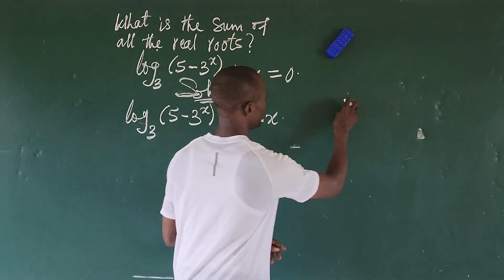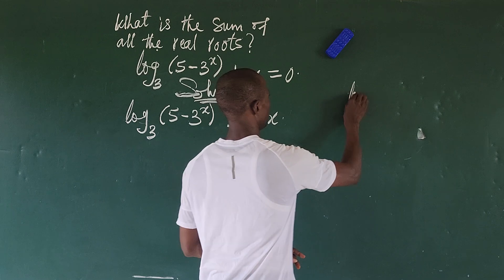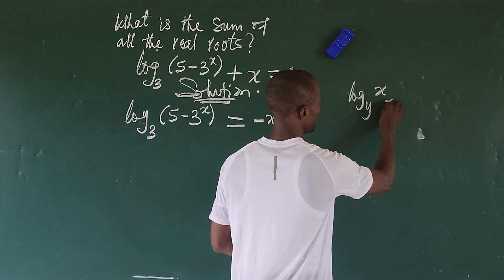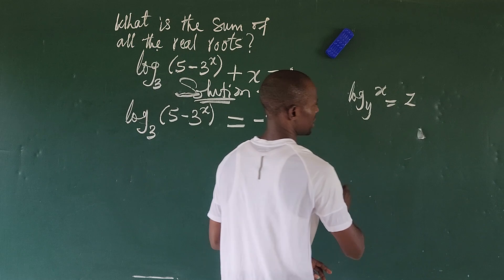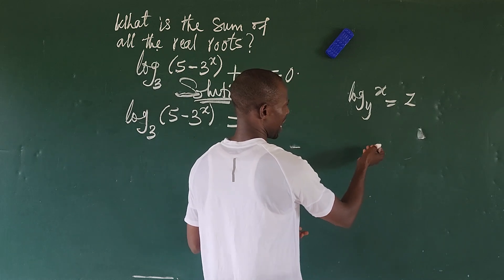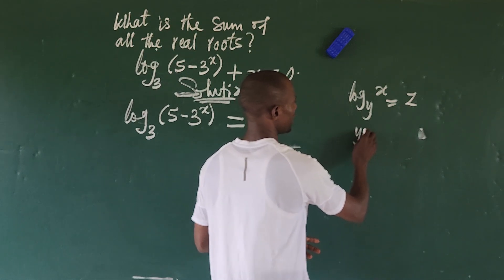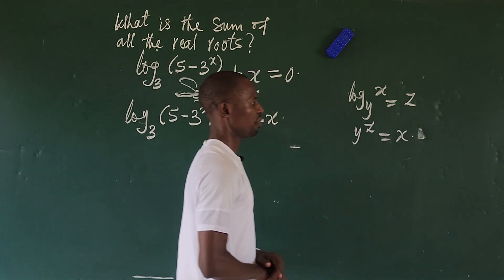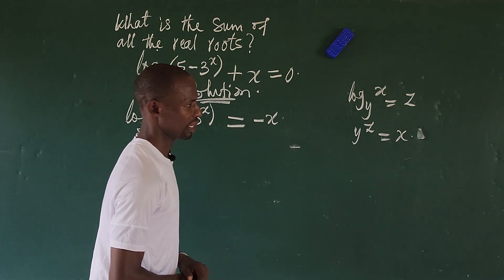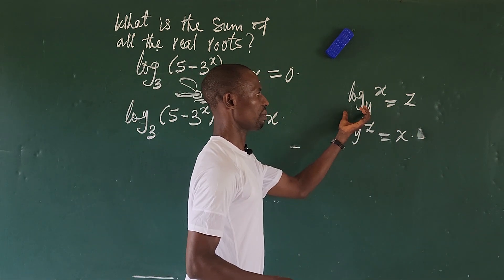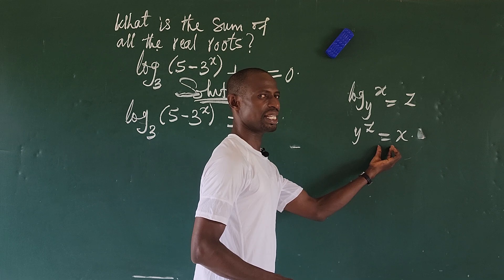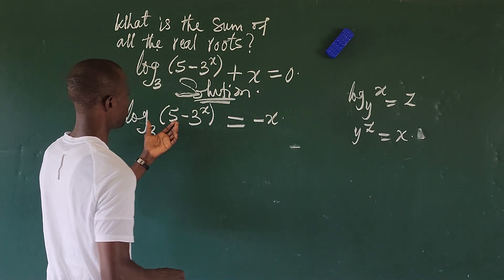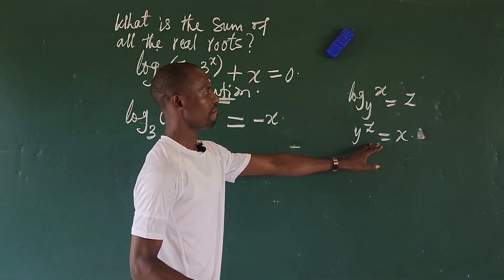From the relationship, we know that log base y of x equals z implies that y to the power of z equals x. We all know this. So this is the logarithmic form and this is the index form. So let's rewrite this expression we have here in this format.